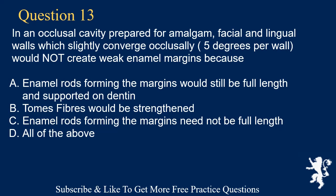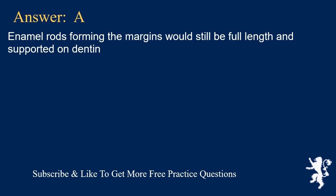Question 13. In an occlusal cavity prepared for amalgam, facial and lingual walls which slightly converge occlusally at 5 degrees per wall would not create weak enamel margins because: A. Enamel rods forming the margins would still be full length and supported on dentin, B. Tomes fibers would be strengthened, C. Enamel rods forming the margins need not be full length, D. All of the above. Answer: A. Enamel rods forming the margins would still be full length and supported on dentin.